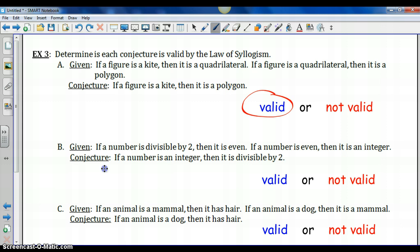Part B. If a number is divisible by two, then it is even. If a number is even, then it is an integer. The law of syllogism would allow us to start with our original hypothesis and arrive at our final conclusion. However, the conjecture tries to do that backwards. We start with our final conclusion as a hypothesis, and then we go all the way back to our original hypothesis as a conclusion. Again, applying this law in reverse does not work. This is not valid.